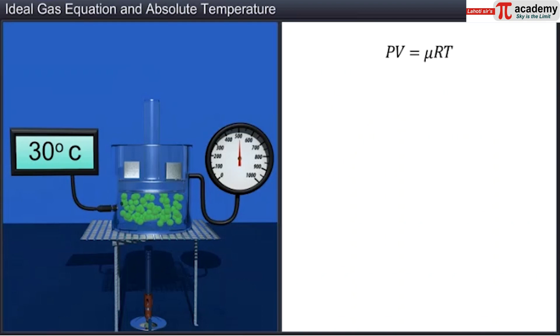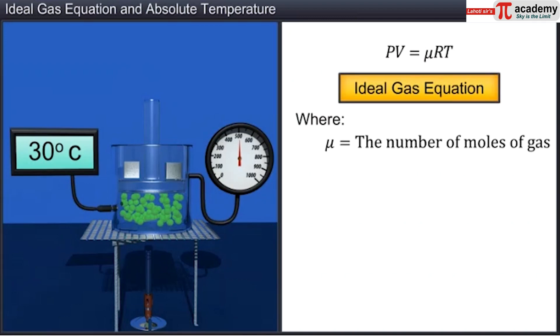PV is equal to mu R T is a generalized ideal gas equation, where mu is the number of moles of gas and R is 8.31 joule per mole per kelvin, which is the universal gas constant.